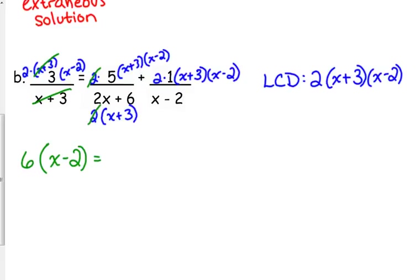In the second one, the 2's cancel, and the x plus 3 cancels, so I've got 5 times x minus 2. Plus, don't lose that plus sign in there. For the last one, the x minus 2 cancels, so we have 2 times x plus 3.